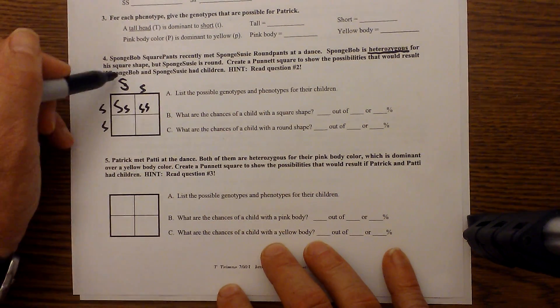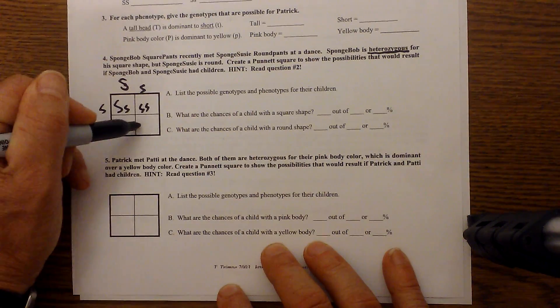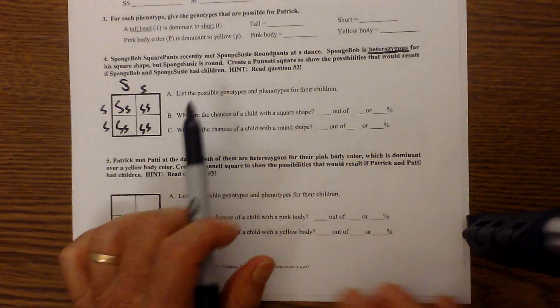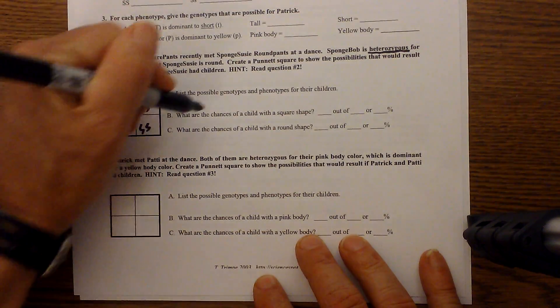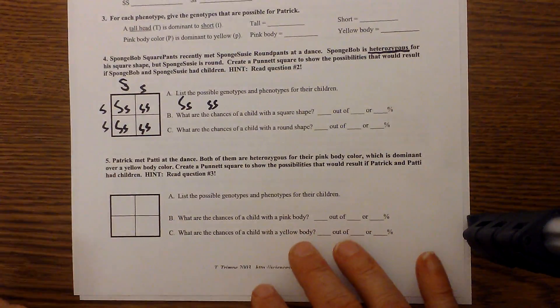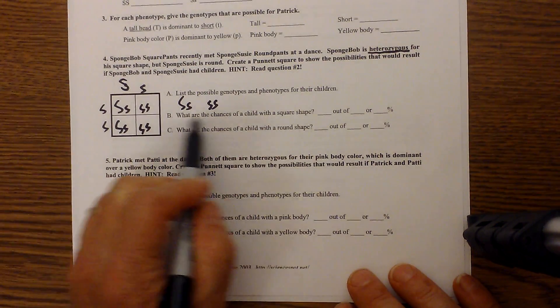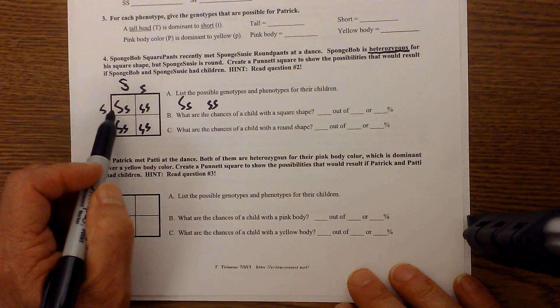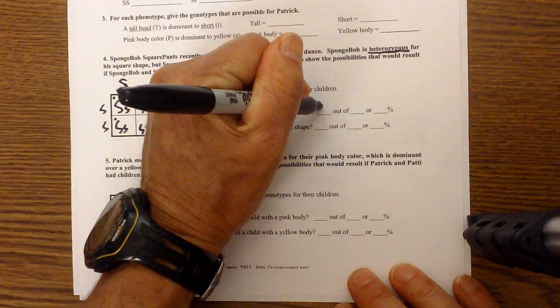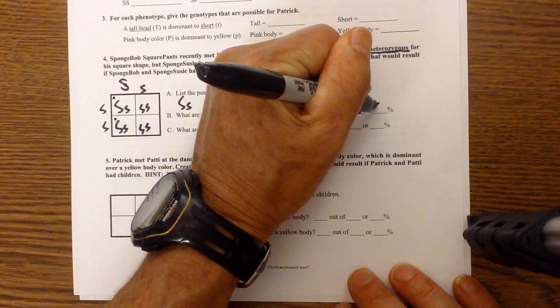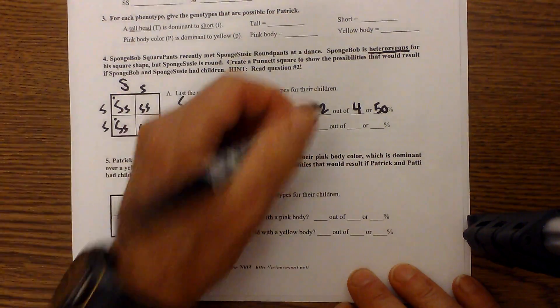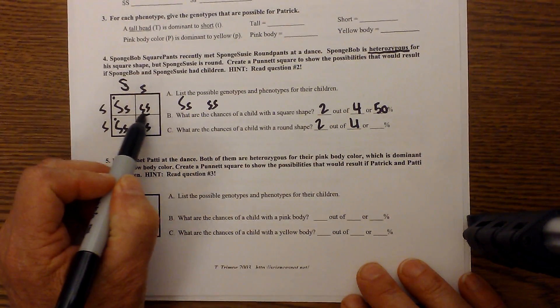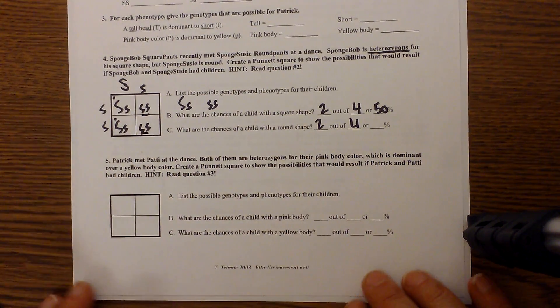And then we have little s, little s, big S, big S, little s, little s. And so now let's fill out the other. List the possible genotypes. Well, you have a heterozygous and a recessive homozygous. So now what are the chances the child will have a square shape? Well, square shape is dominant, so you will have one, two. So you will have two out of four, which is 50%. And then you will have two out of four for the recessive. And remember, the only way you will get a recessive is if you have two lowercase letters.